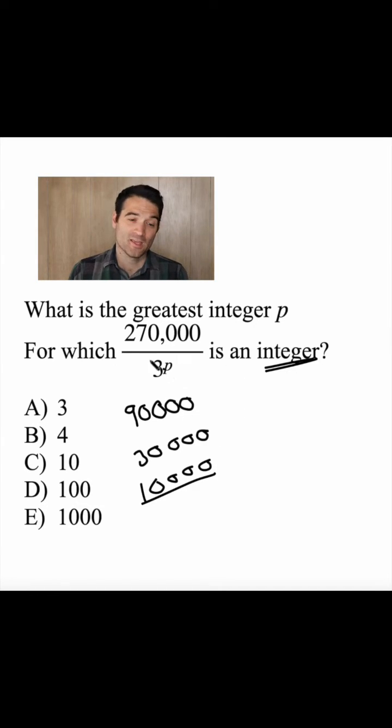It has to be an integer. So I can basically divide this 3 times by 3 until it's not an integer anymore, meaning that the correct answer here is 3. There are three 3s that I could put into this number.